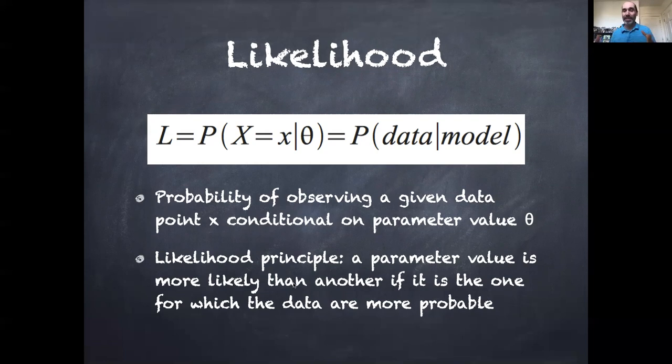Because we're going to use that principle to say, if these were two alternatives, the parameter values associated with the second hypothesis is more likely because it's the one for which the data were more probable.